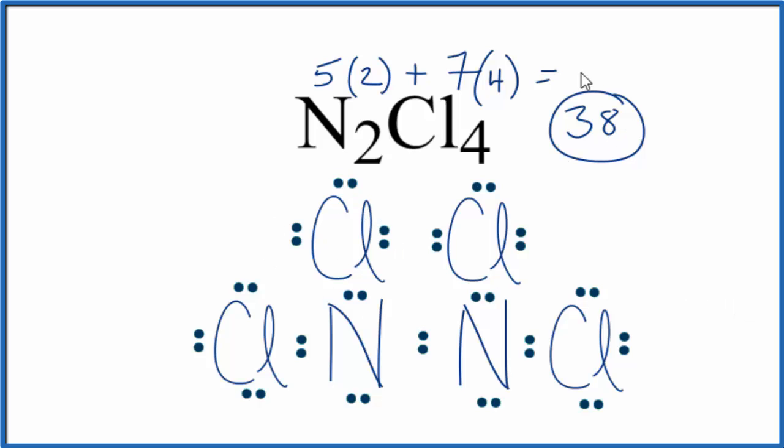Each atom has an octet, we've used 38 of the valence electrons. Let's talk briefly about the molecular geometry.